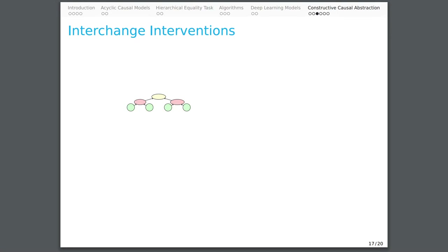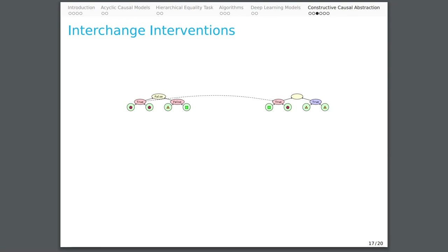For example, consider the following interchange intervention. The source input is circle-circle-triangle-triangle. The first intermediate variable is true and the second is false, making the final output false. The base input is square, pentagon, triangle, triangle. The first intermediate variable is false and the second is true. However, we intervene on the first variable, setting it to the value it would take if the source input were provided, which is true. This makes the final output true.